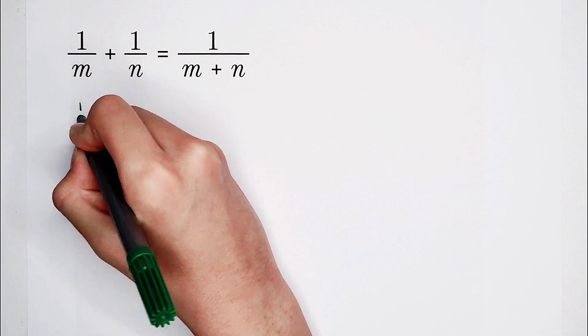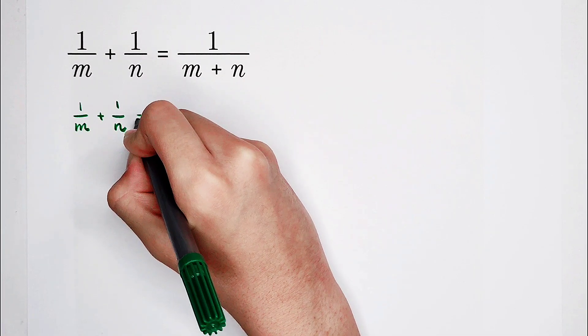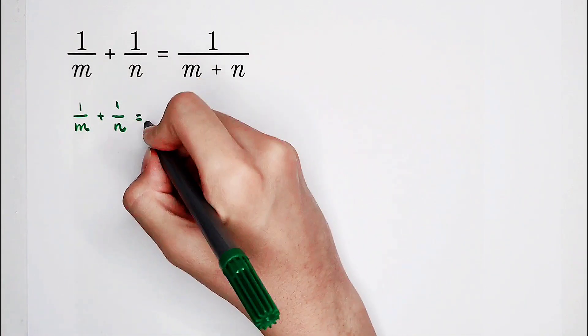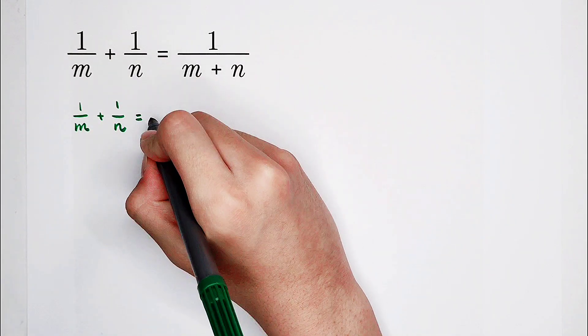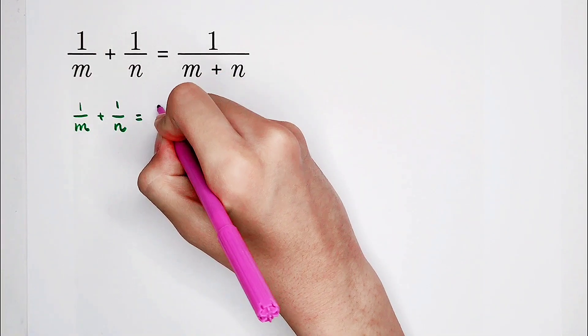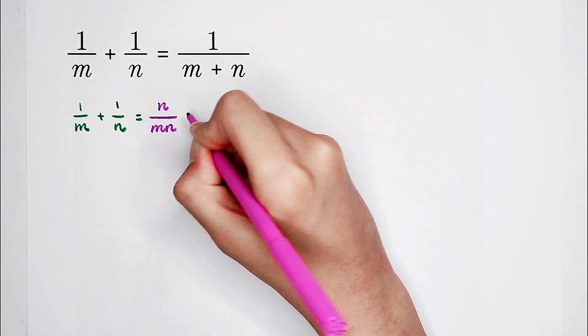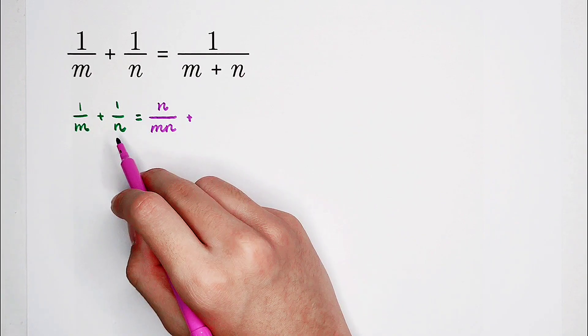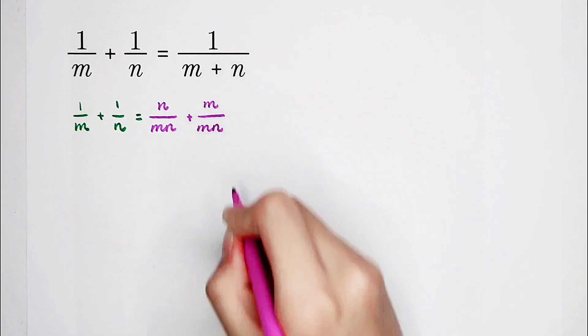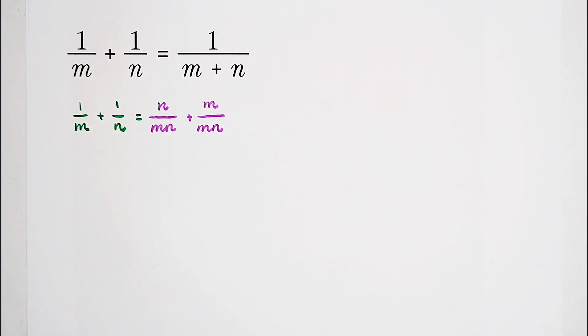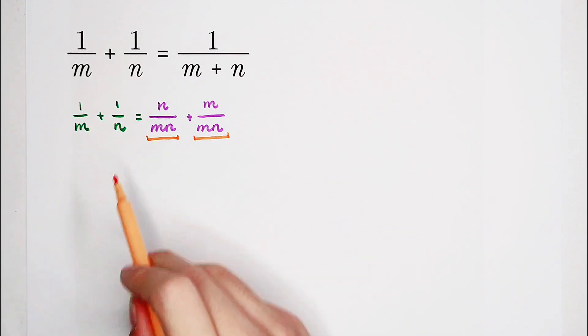So that means for the left-hand side, 1 over m plus 1 over n is equal to—for 1 over m, we can multiply by n on the numerator and n on the denominator. So now it looks like this. Our goal is to make the denominators have the same value, m times n.